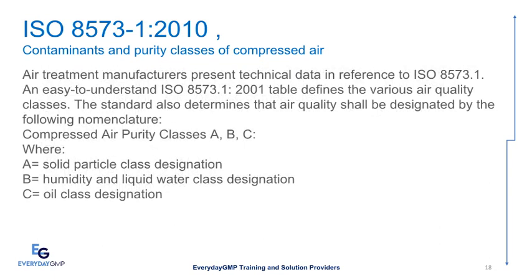Air treatment manufacturers present technical data in reference to ISO 8573.1. An easy-to-understand ISO 8573-1-2010 table defines the various air quality classes. The standard also determines that air quality shall be designated by the following nomenclature: Compressed air purity classes A, B, C — where A equals solid particle class designation, B equals humidity and liquid water class designation, and C equals oil class designation.